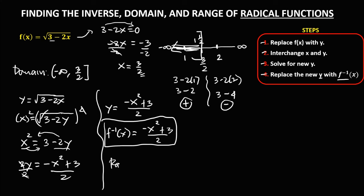From the inverse, to find the range — since there is no variable in the denominator, the range is from negative infinity to positive infinity. This is how to find the inverse, domain, and range of radical functions.